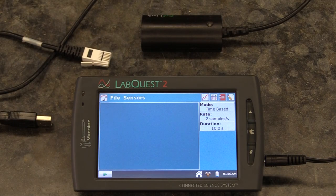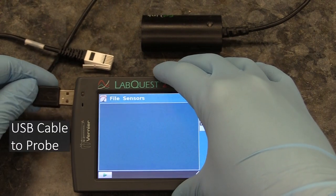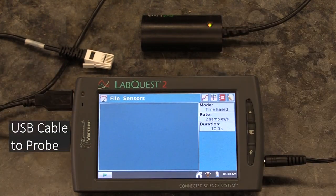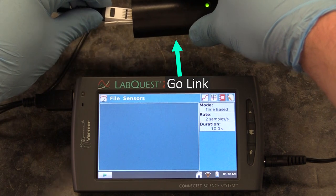Once it has, you can plug the pH probe's USB cable into it. On some models, you'll plug the probe into a Go Link that plugs into the computer by USB.